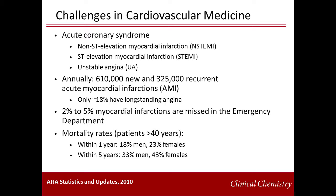Patients with unstable angina are also classified into the acute coronary syndrome definition and present with chest pain or other symptoms without electrocardiogram changes or evidence of myocardial necrosis. Annual statistics estimate there are 610,000 new and 325,000 recurrent acute myocardial infarctions with 6 million visits to emergency rooms across the United States.